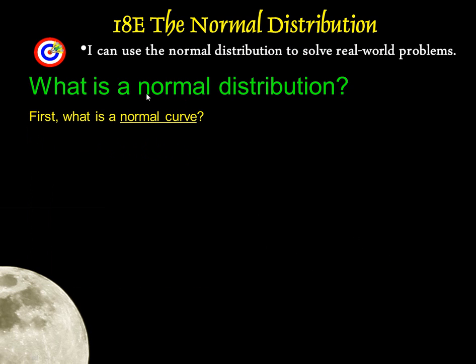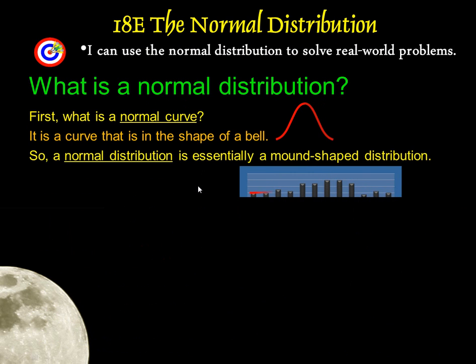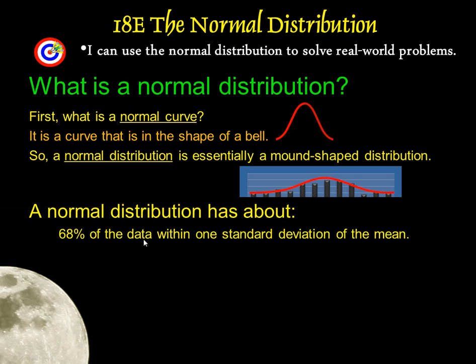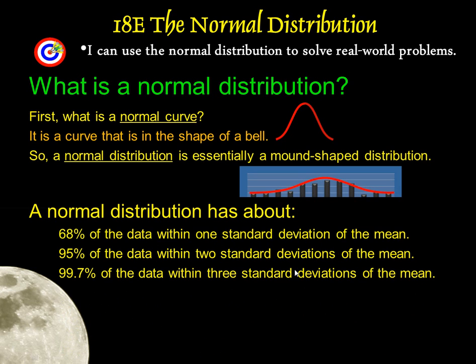First off, what is a normal distribution? We got to figure out what a normal curve is. It's simply just a curve that's in the shape of a bell. It's called the bell curve. A normal distribution is essentially just a mound-shaped distribution, so a lot of the data is clumped in the middle and less data is clumped on the outside, away from the middle or the median. A normal distribution has about 68% of the data within one standard deviation of the mean, 95% of the data is within two standard deviations of the mean, and 99.7% of the data is within three standard deviations of the mean. This is also referred to as the 68-95-99.7 rule.